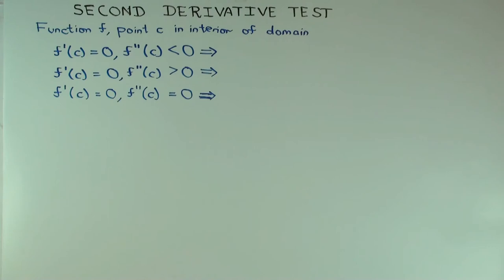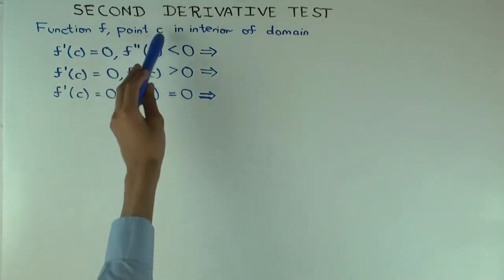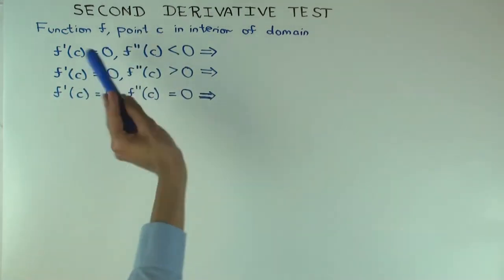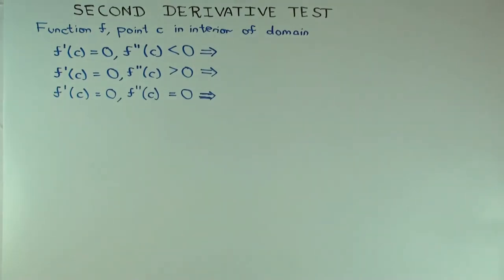And here's how the test goes. So suppose f is a function, c is a point in the interior of the domain, so f is defined on the left and right. And suppose f prime of c is zero, so that's one type of critical point. And suppose f double prime of c exists, so the second derivative of the function at the point exists.